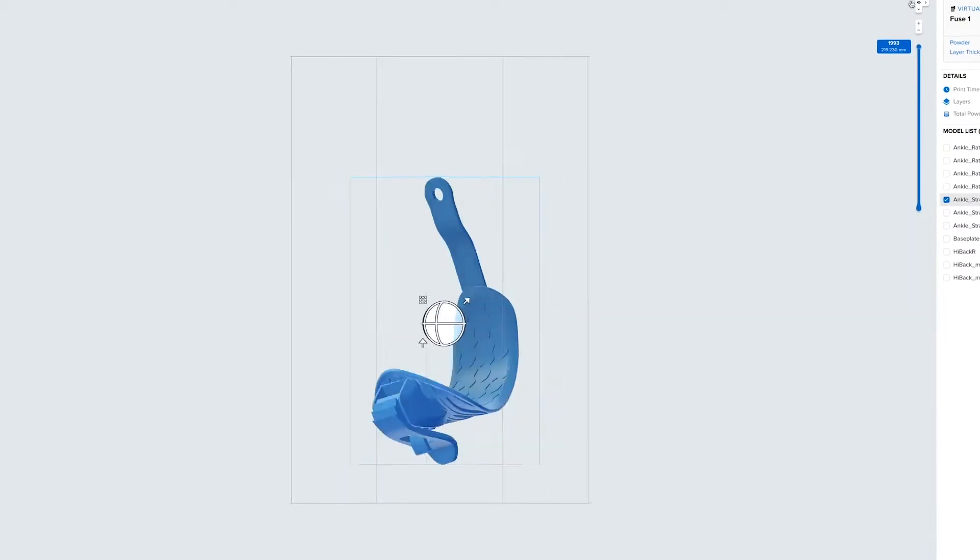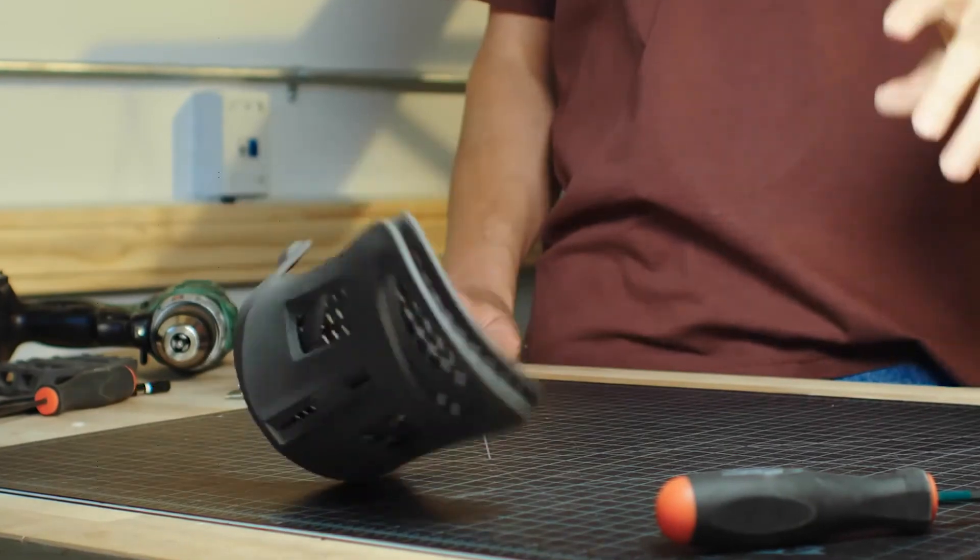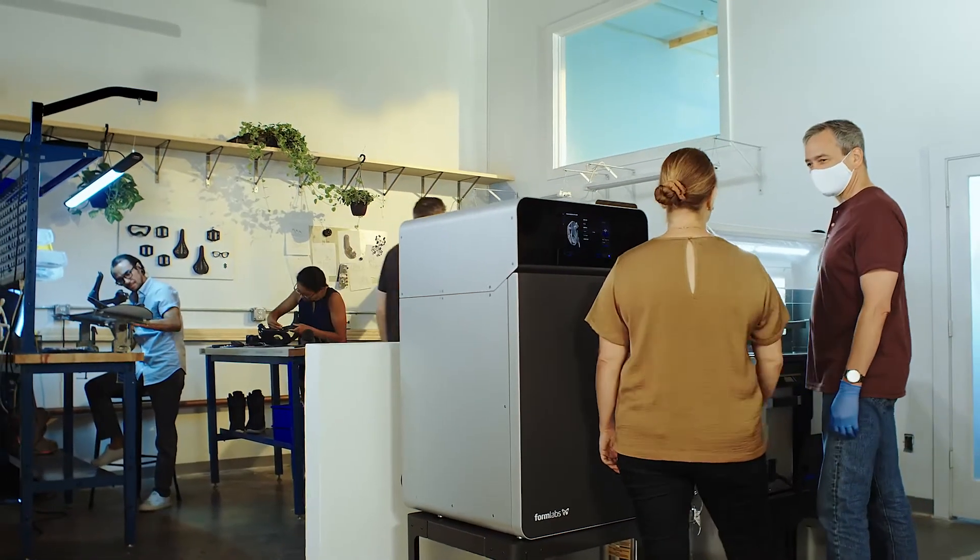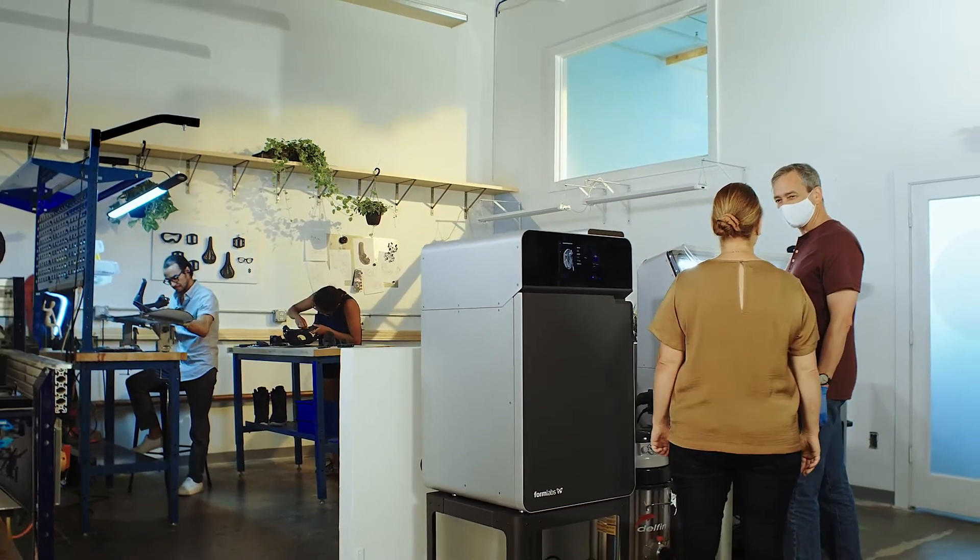Selective laser sintering or SLS 3D printing is relied on for printing strong functional nylon parts. In the past, SLS has been too expensive and difficult to use for many businesses.